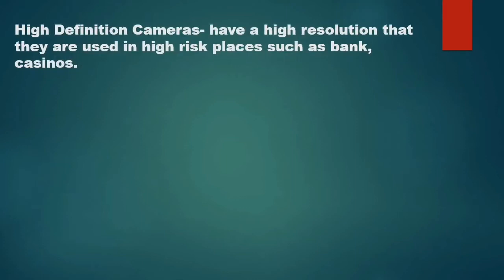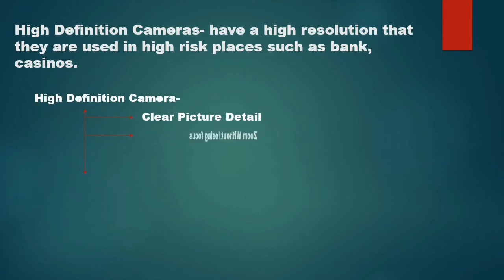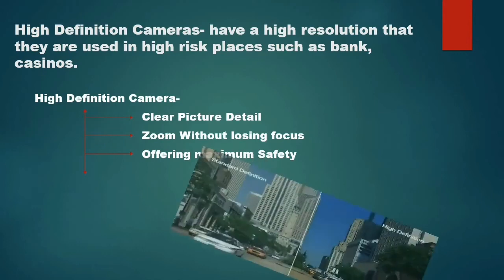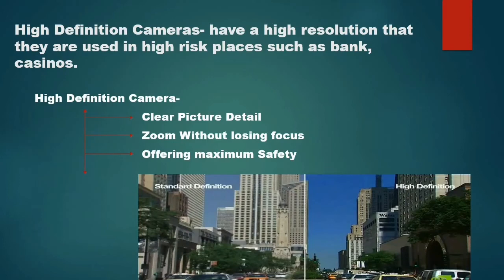Another kind of camera is the high definition camera. It has a very high resolution and is used in high-risk places such as banks. You would use a high definition camera to capture footage in banks and other important places. It gives a clear, sharp picture with no blurring or loss of focus — a very accurate image — and offers maximum safety.